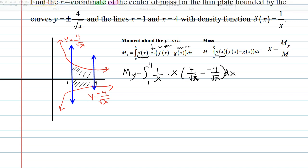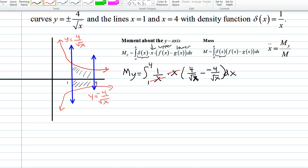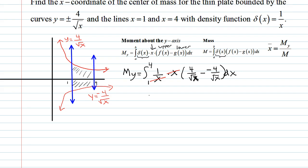So what happens is these guys cancel nicely and we end up just with 8 over root x. Let's pull the 8 out. And root x would be x to the negative one half power. Integrating that, we add 1 and get x to the half. Instead of dividing by a half, we multiply by 2.